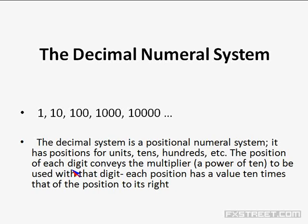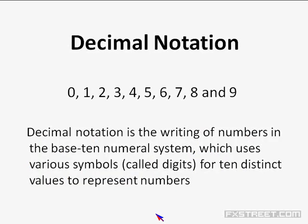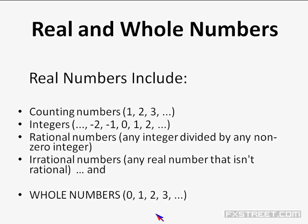The world uses the decimal numeral system — a positional numeral system with positions for units 10, 100, et cetera. The position of each digit conveys the multiplier, which is always a power of 10, and each position has a value of 10 times that of the position to its right. Writing numbers in a base-10 numeral system uses ten distinct symbols called digits — 0, 1, 2, 3, through 9 — to represent numbers.